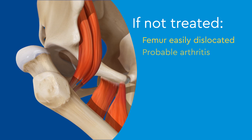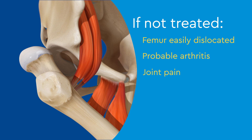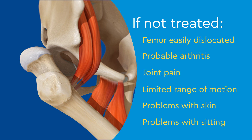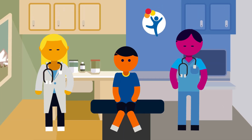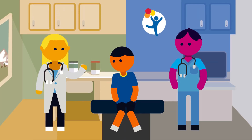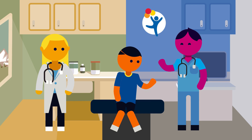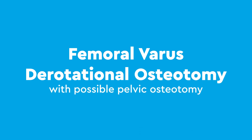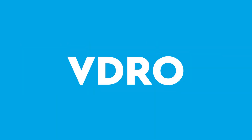Other complications can include probable arthritis, joint pain, limited range of motion, problems with skin around the groin, and problems with sitting. Your care team, including your primary care provider, rehab physician, or developmental pediatrician, and your orthopedic surgeon, will screen for the warning signs that indicate treatment is needed. Surgical treatment for these deformities is called femoral varus derotational osteotomy, with possible pelvic osteotomy, or VDRO for short.